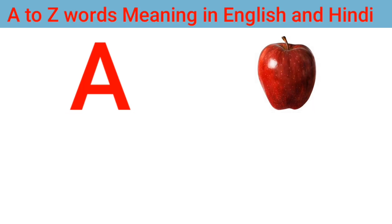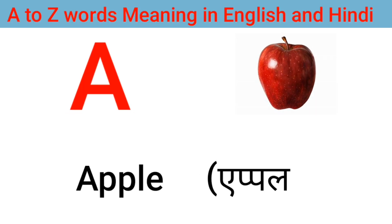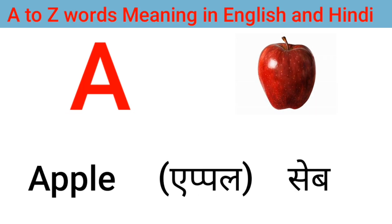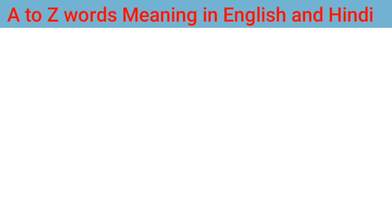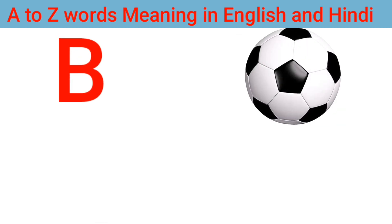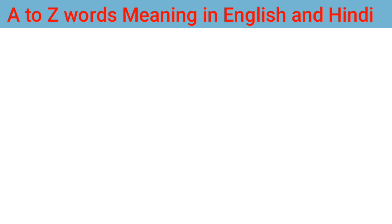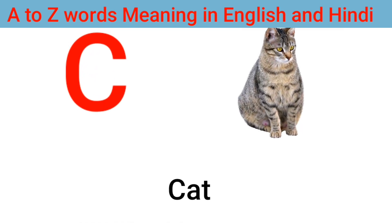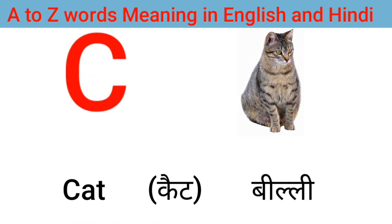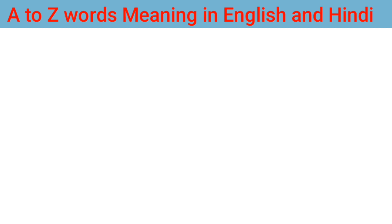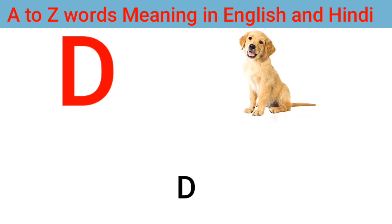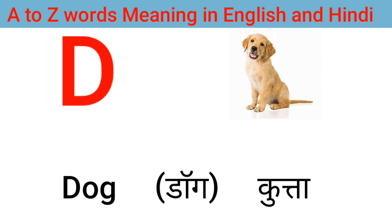A for apple, apple means sheep. B for ball, ball means skin. C for cat, cat means billy. D for dog, dog means kutta.